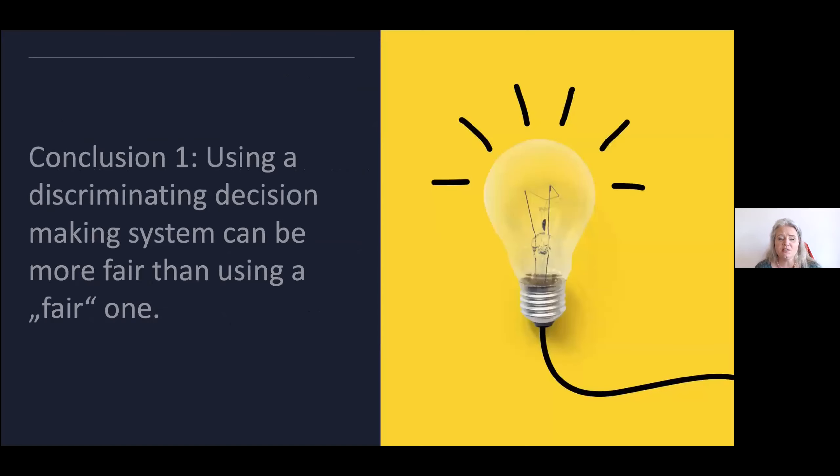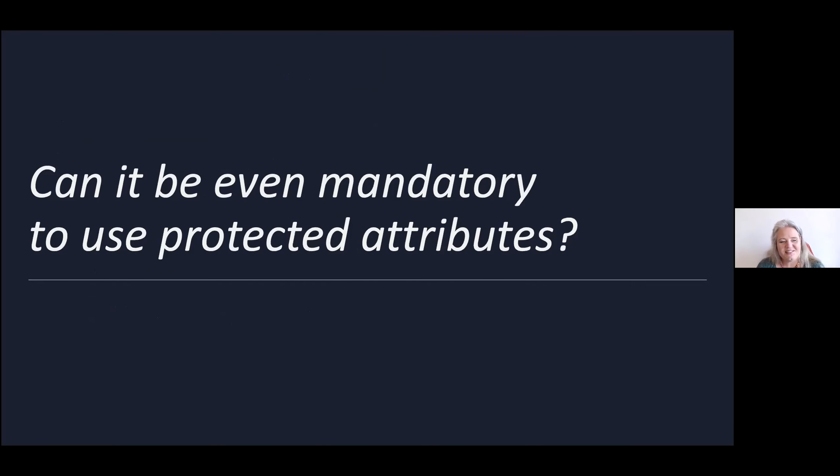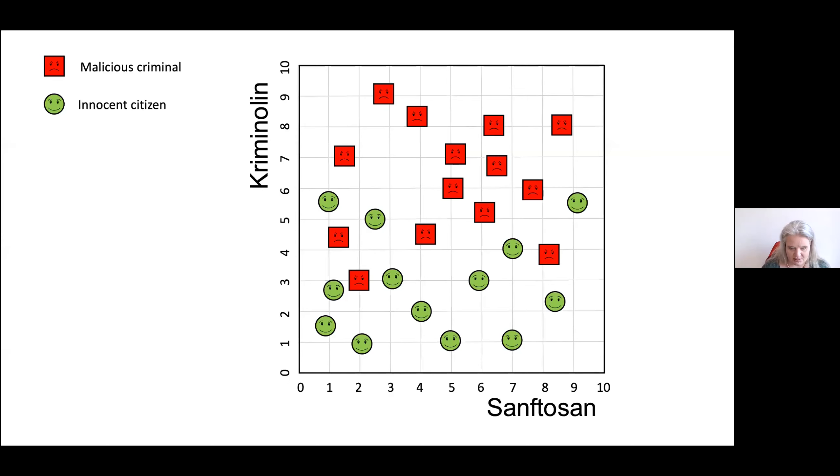Conclusion one is using a discriminating decision-making system can be more fair than using a fair one if the social process around it is designed such that the discrimination is detected and then balanced out. In the same way, I want to ask whether it can be even mandatory to use protected attributes. We've seen a system that is discriminating without using protected attributes, but might it even be mandatory to use them?